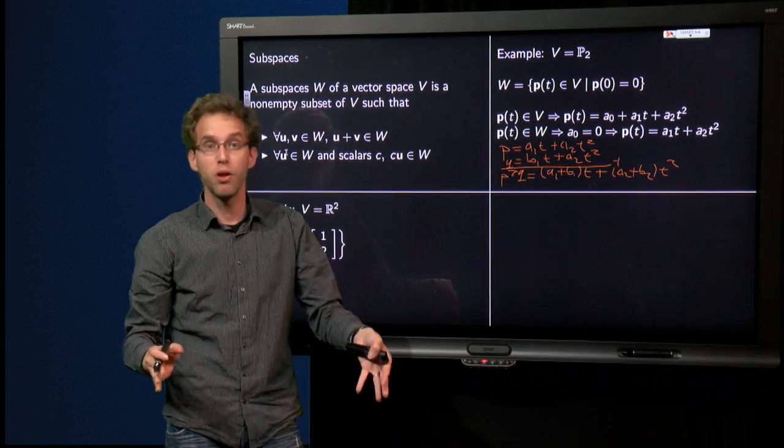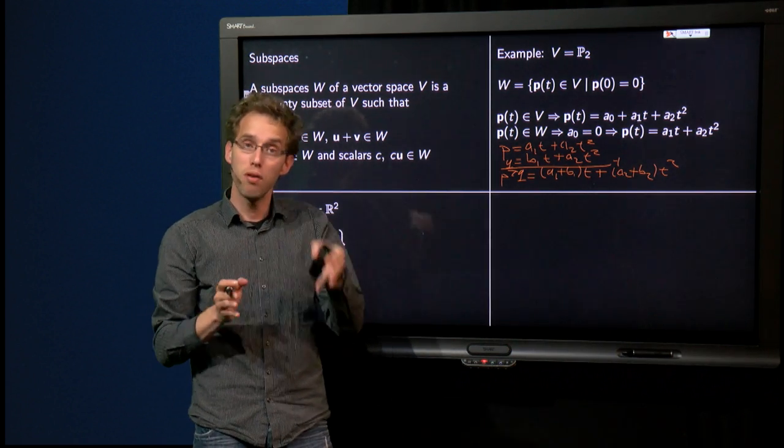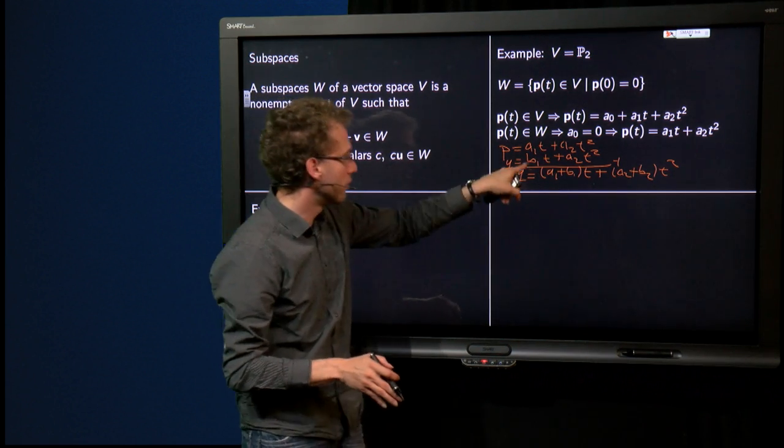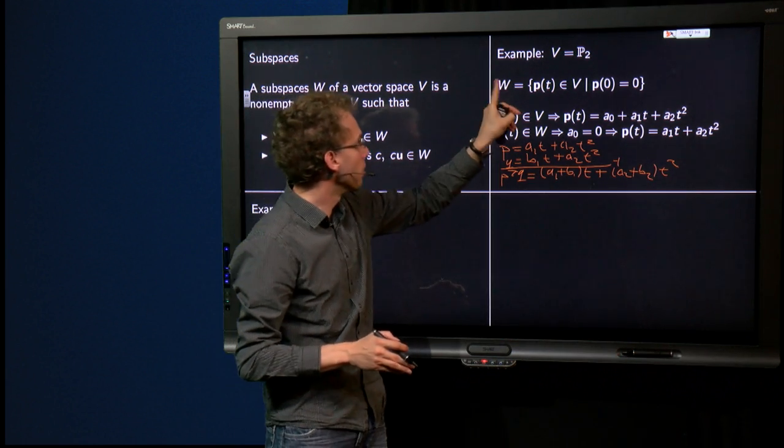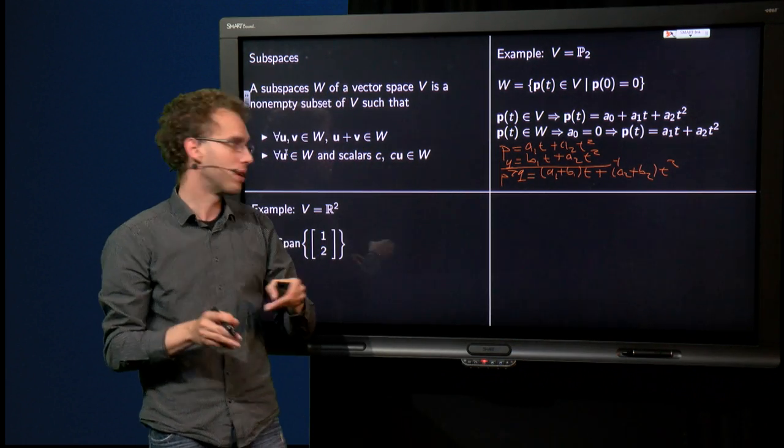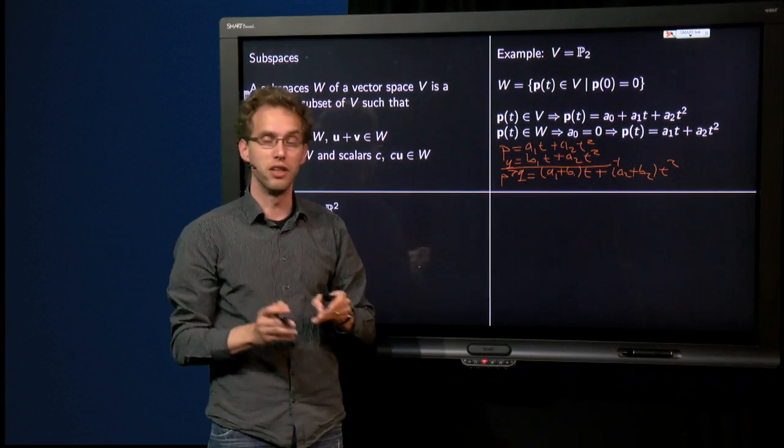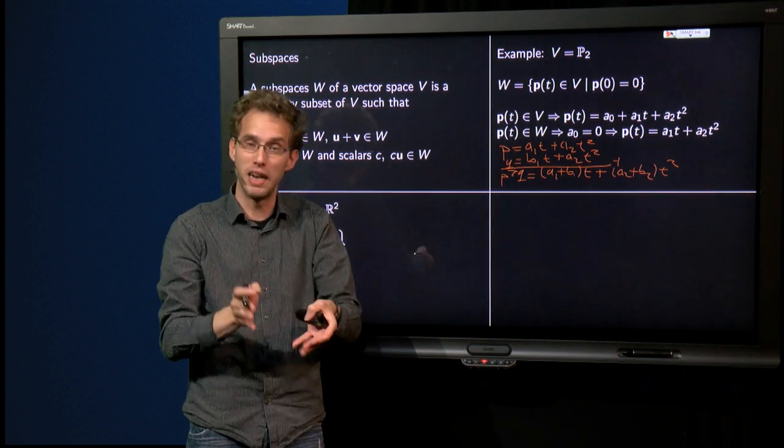Again a polynomial of degree 2, of course, because it is again in V. Moreover, also here the first coefficient is 0, only coefficients before the t and t², so this p + q is also in W. Well, you can similarly prove the second property. So you see that W is in fact not only a subset of V, but also a subspace of V.